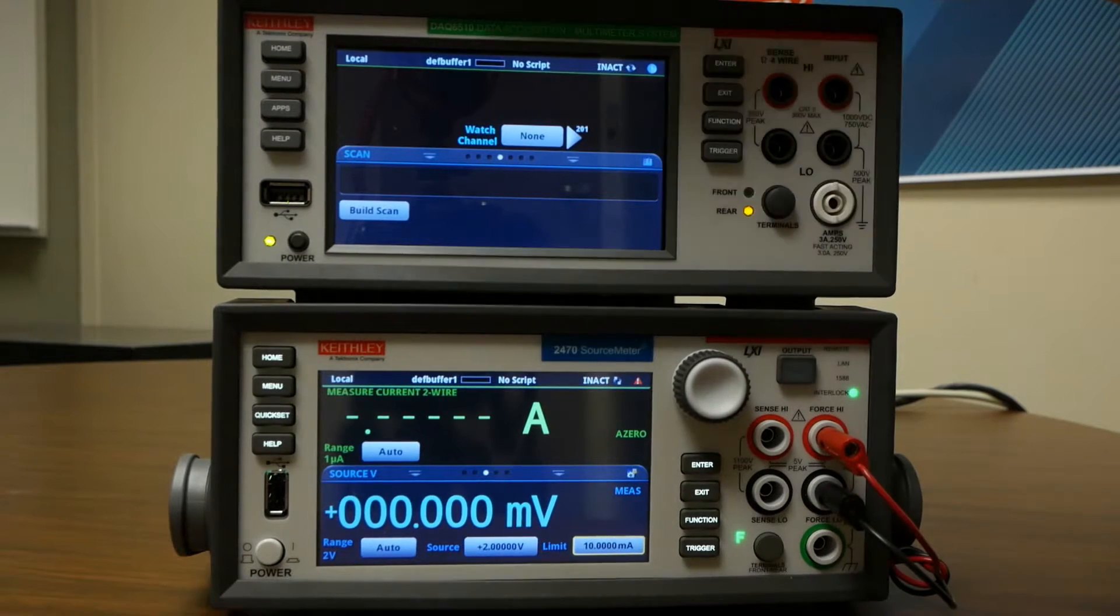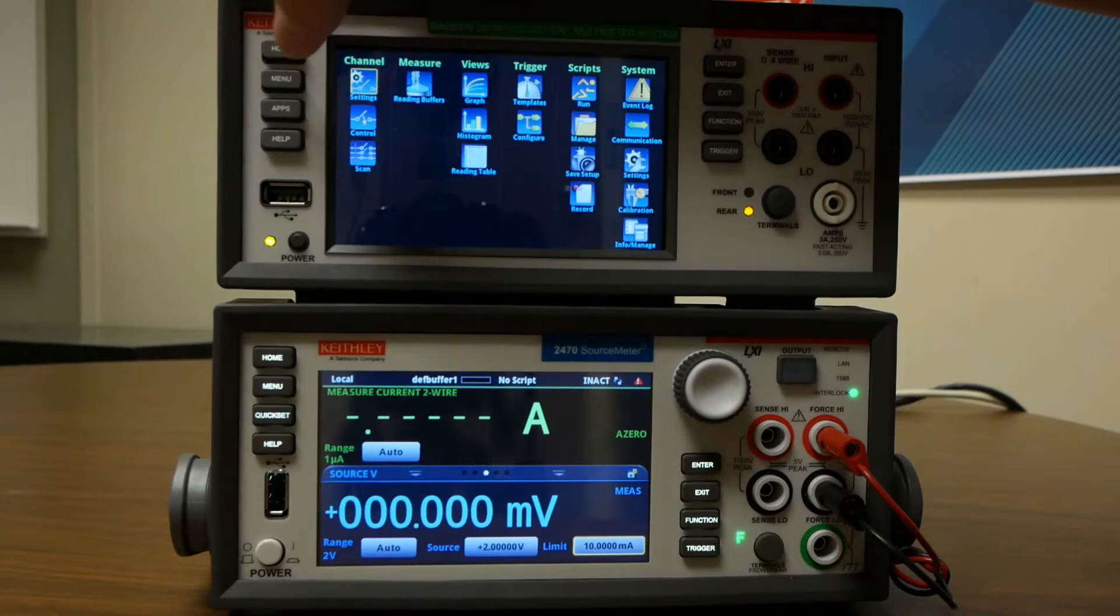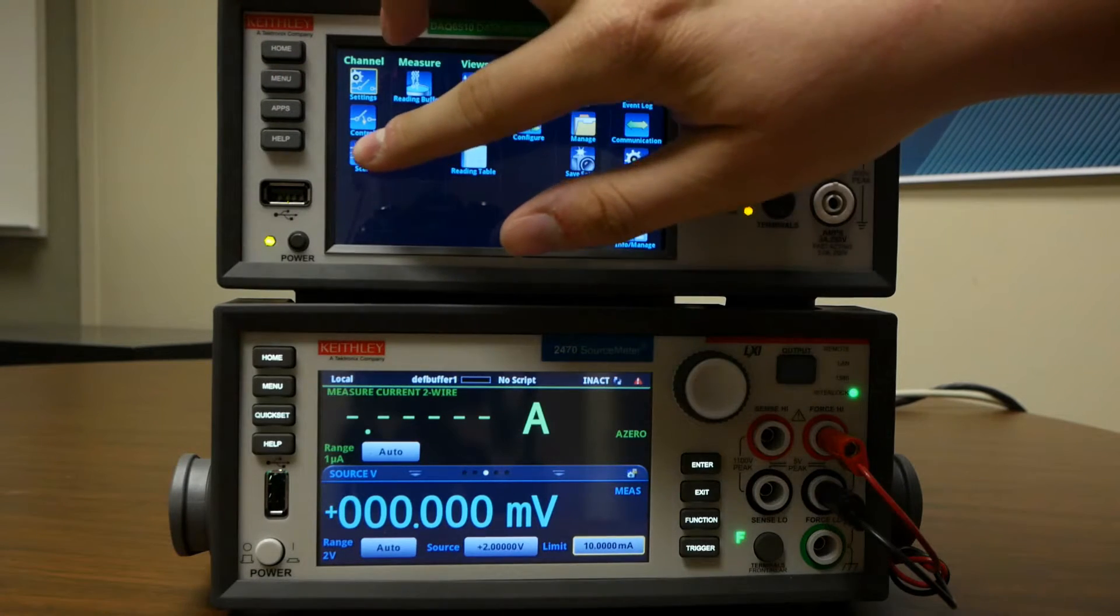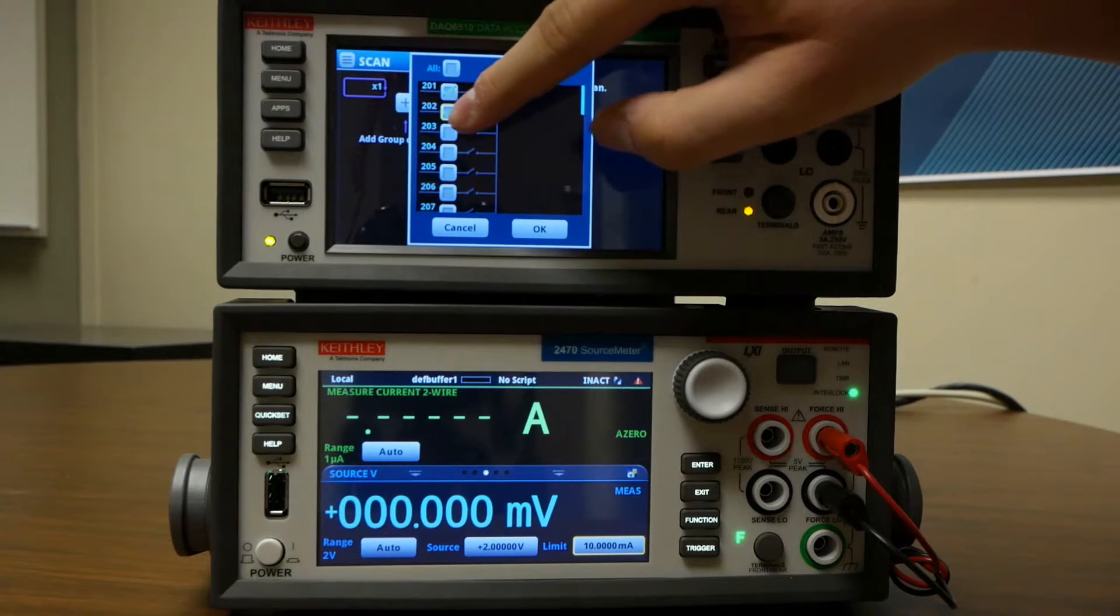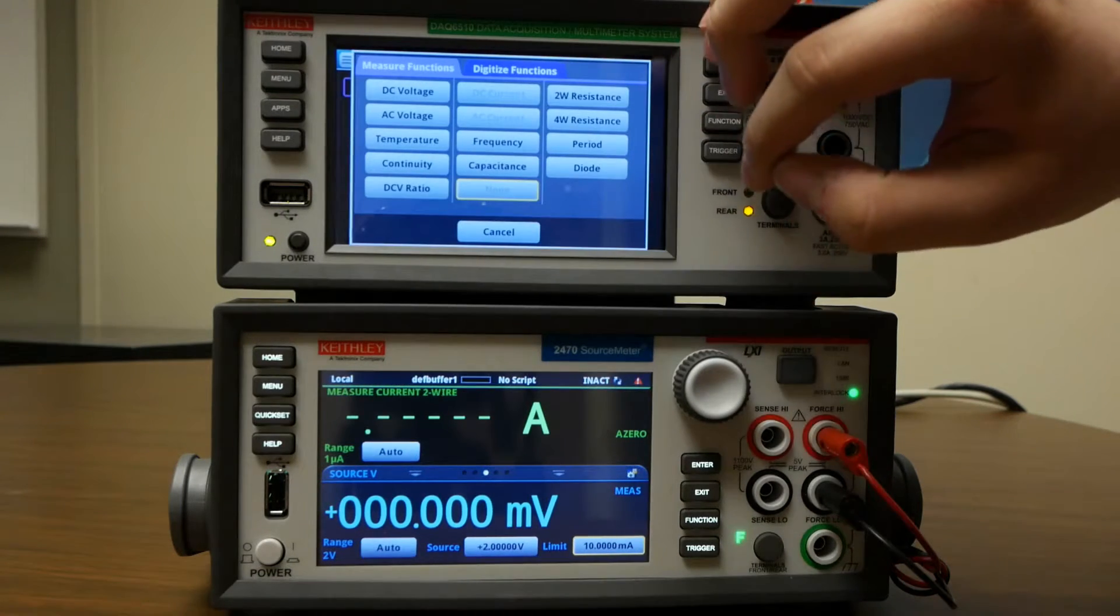We'll go to the DAQ6510. We're going to start by pressing the menu button. Under channel, go down to scan. We're going to add our channels. Our devices are in channels one through three. Press OK. And we'll just have it monitor voltage.